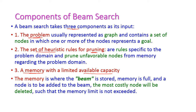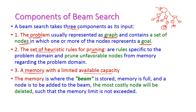The problem is normally represented as a graph which contains a set of nodes — a collection of nodes in which one or more goal nodes may be present. This is the starting node, that is the root node. From the root node, we have more nodes. One or more goals may be present, and the double circle represents the goal node.